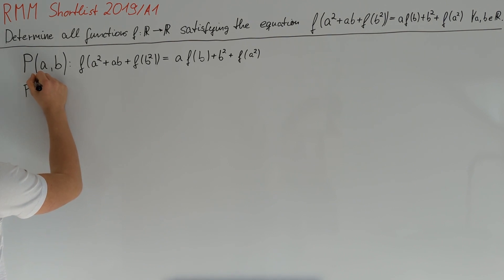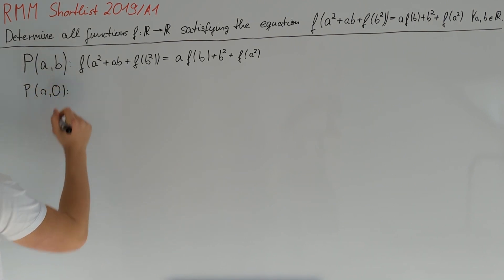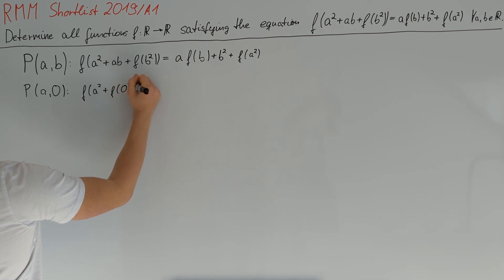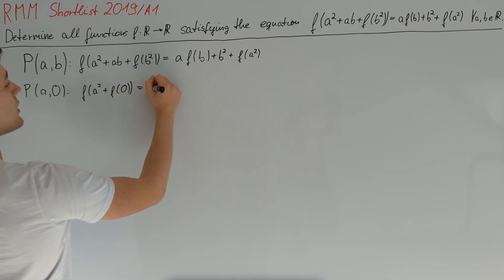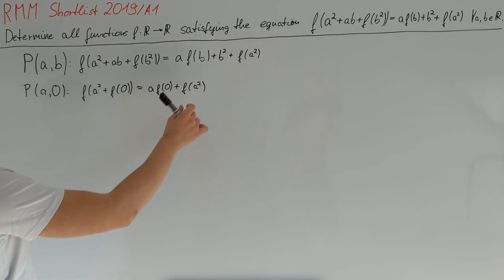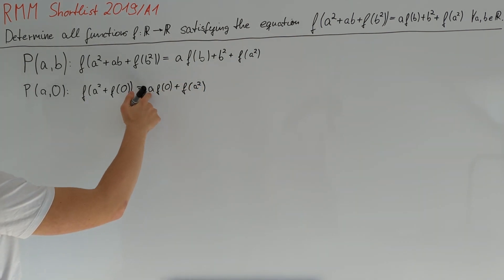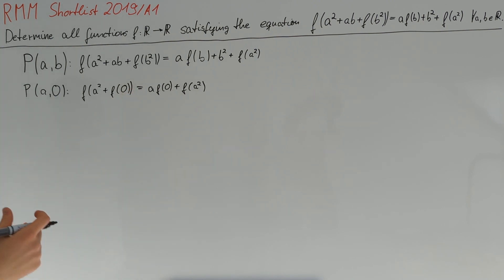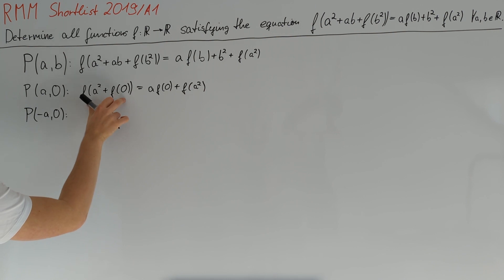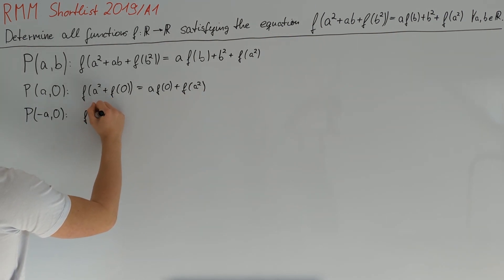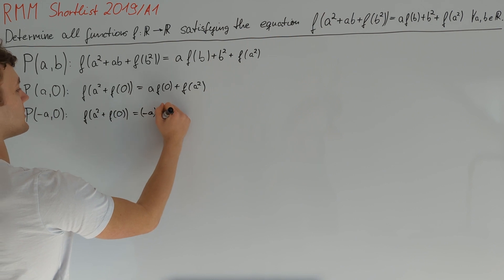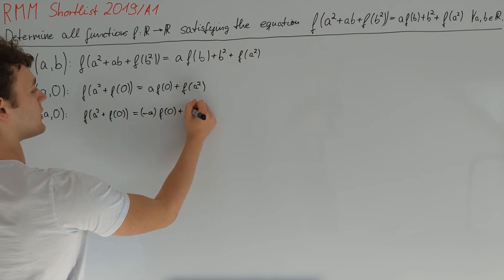Let's take a look at what P(a, 0) tells us. We obtain that f(a²) + f(0) must always be equal to a·f(0) + f(a²). We notice that a only appears in the form of a² inside those f terms, but here we have a linear a term. So it's a good idea to also look at P(−a, 0), which gives us f(a²) + f(0) = −a·f(0) + f(a²).